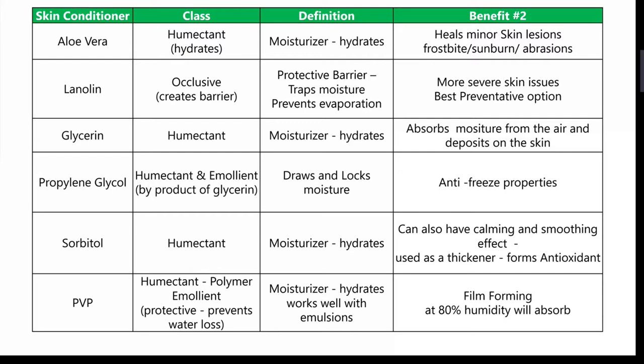Then we can look at propylene glycol. This is kind of a double emollient — it's a humectant and what they consider an emollient. This is a byproduct of glycerin. It draws and locks the moisture as well, and it's good for anti-freezing properties, so you can use that in colder conditions. And we have sorbitol, which is again a humectant. It's going to moisturize and hydrate. This one can also have a calming or soothing effect on the teat. We also use it as a thickener.